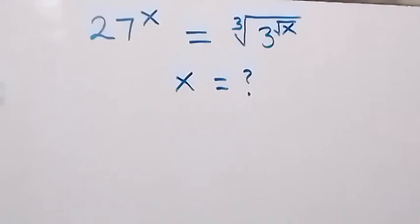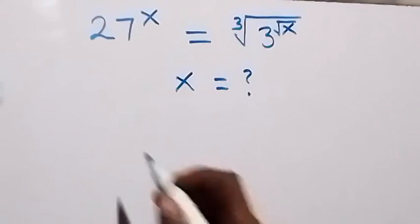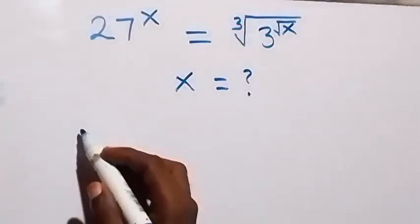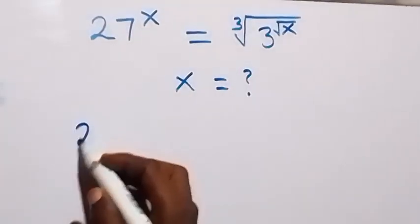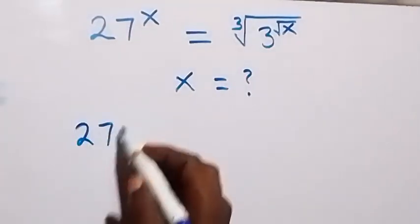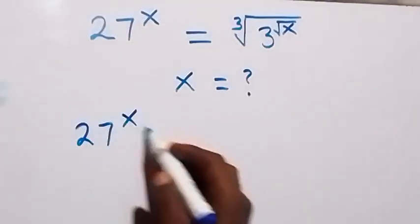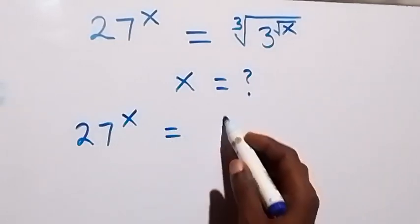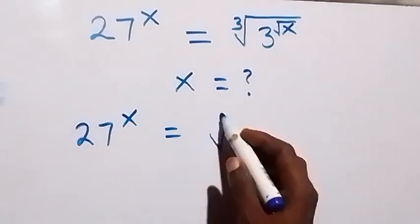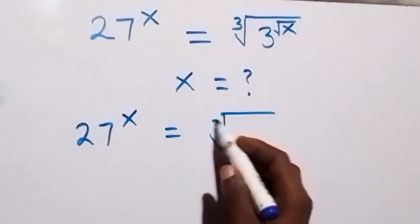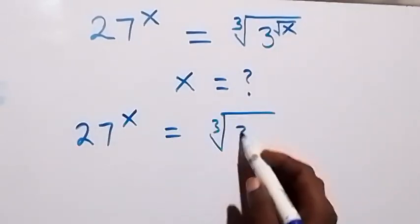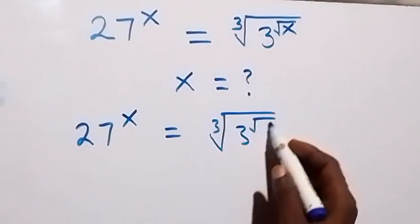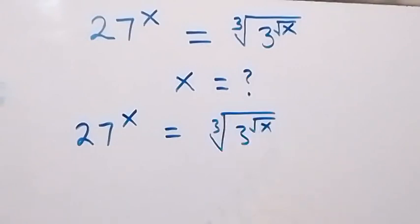Hello, you are welcome. How to find the value of x in this problem: given that 27 raised to power x equals k root of 3 raised to power root x.